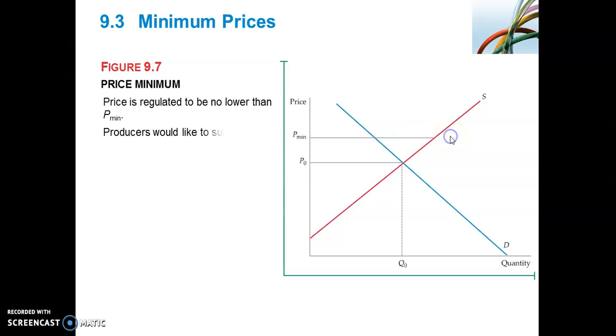So what would be the resultant impact of that? Well first of all, producers would want to produce at Q2 because of the higher price that they could obtain. So that would result in the quantity supplied increasing from Q0 to Q2. However, on the other hand, if we have a look at consumers by tracing the minimum price to point on your demand curve, you can now see what the quantity demanded would be by consumers and they will only purchase Q3.